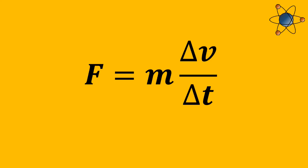So we can write this as f equals m delta v over delta t, where delta v over delta t is the change in velocity divided by the change in time, which is the acceleration by definition.